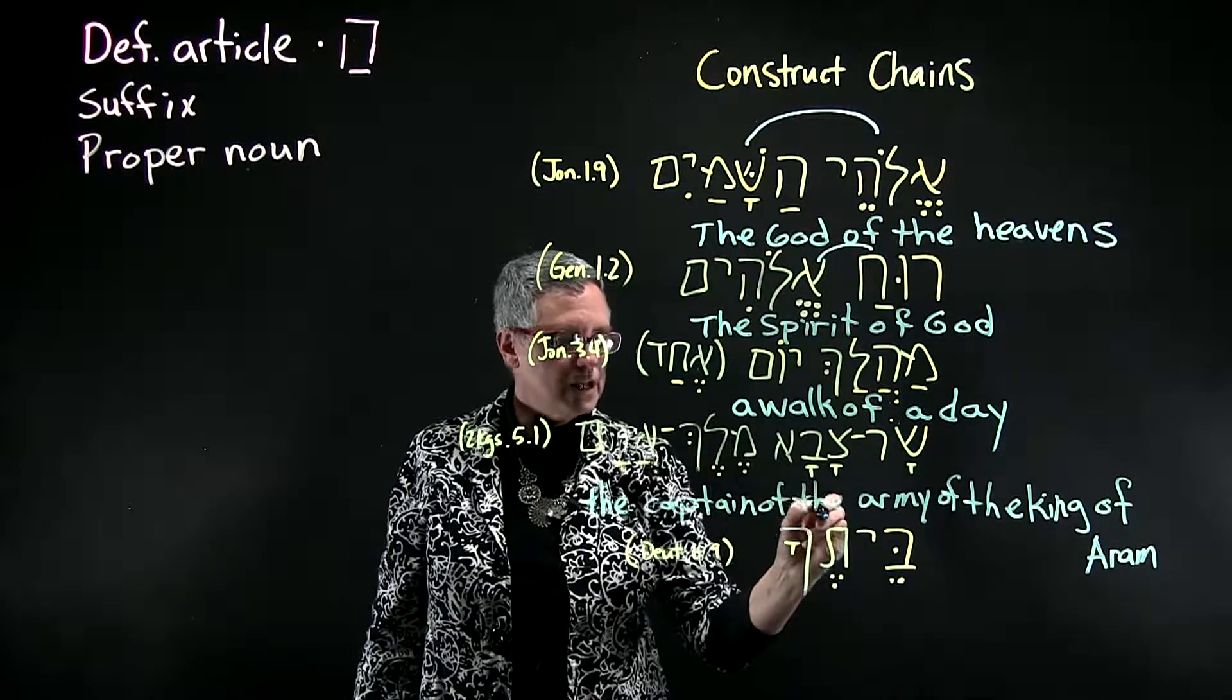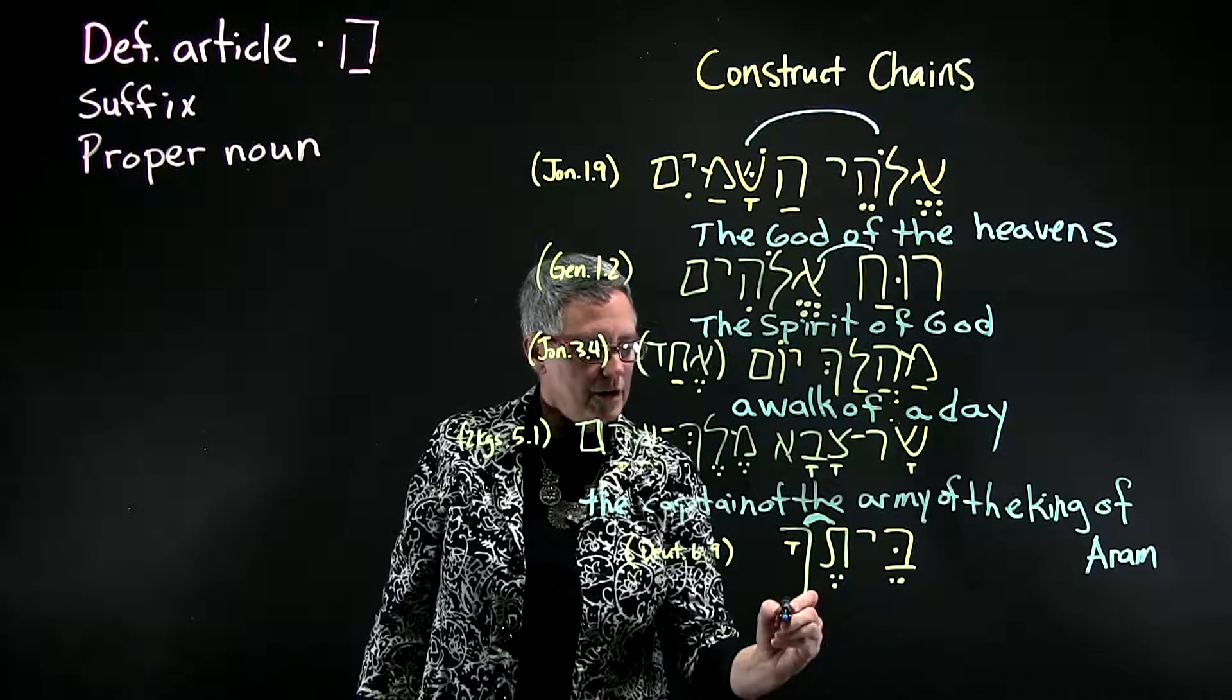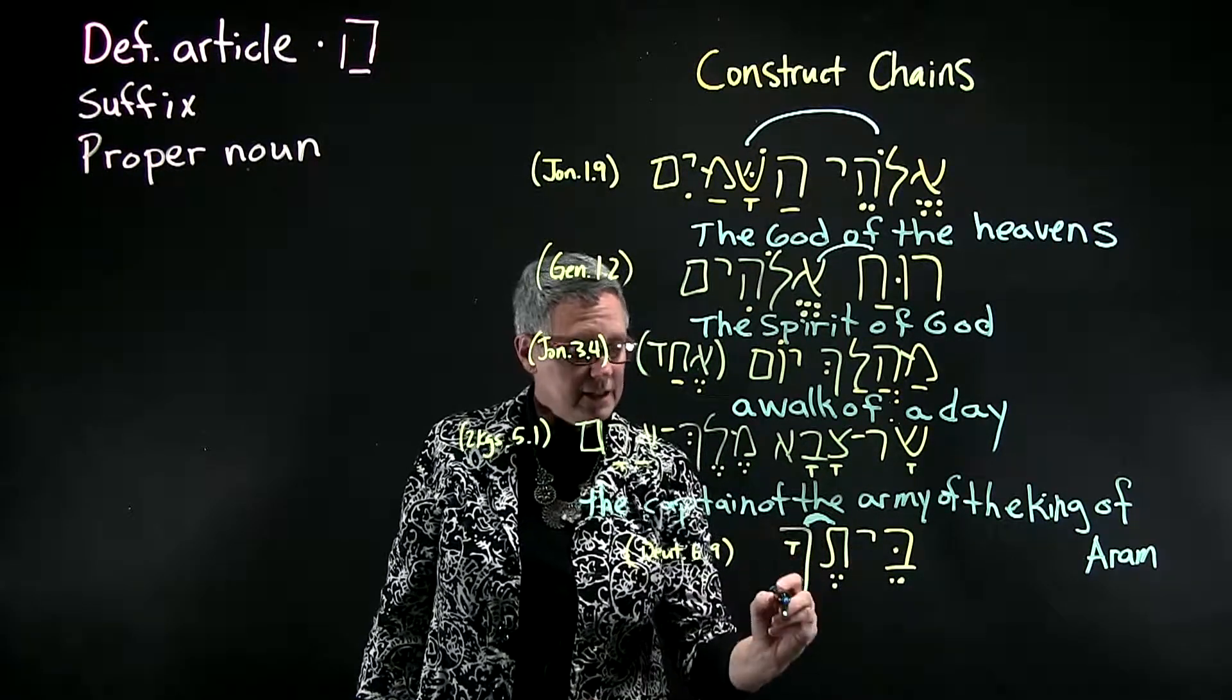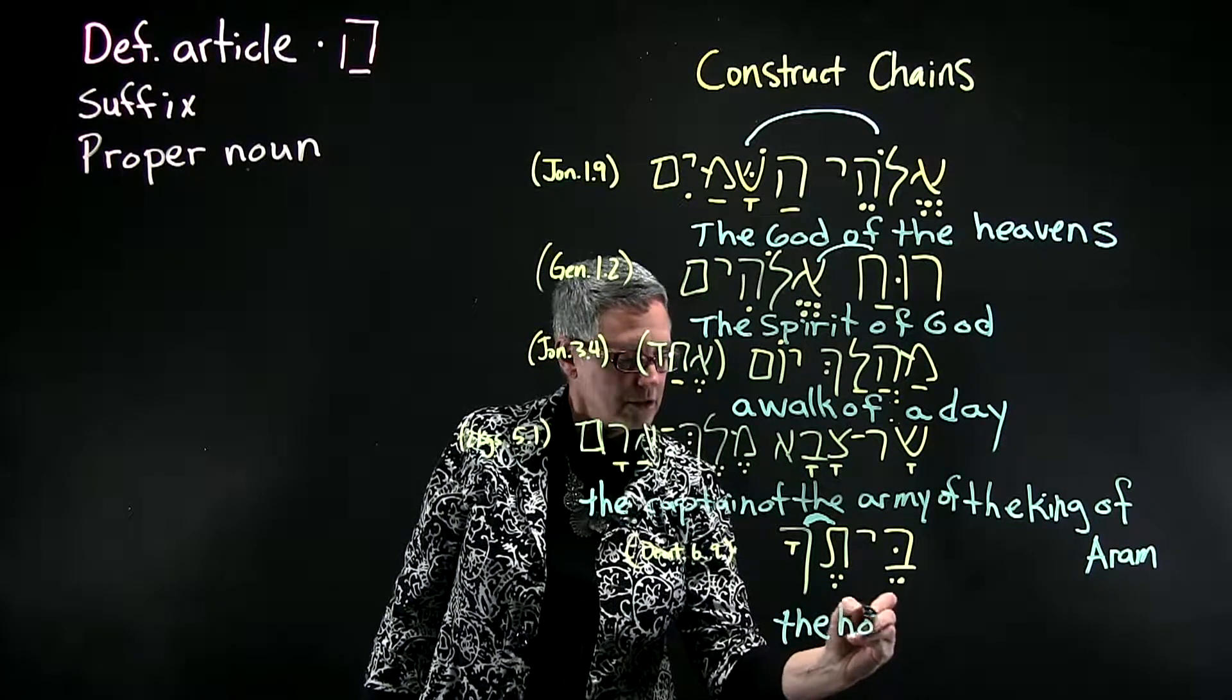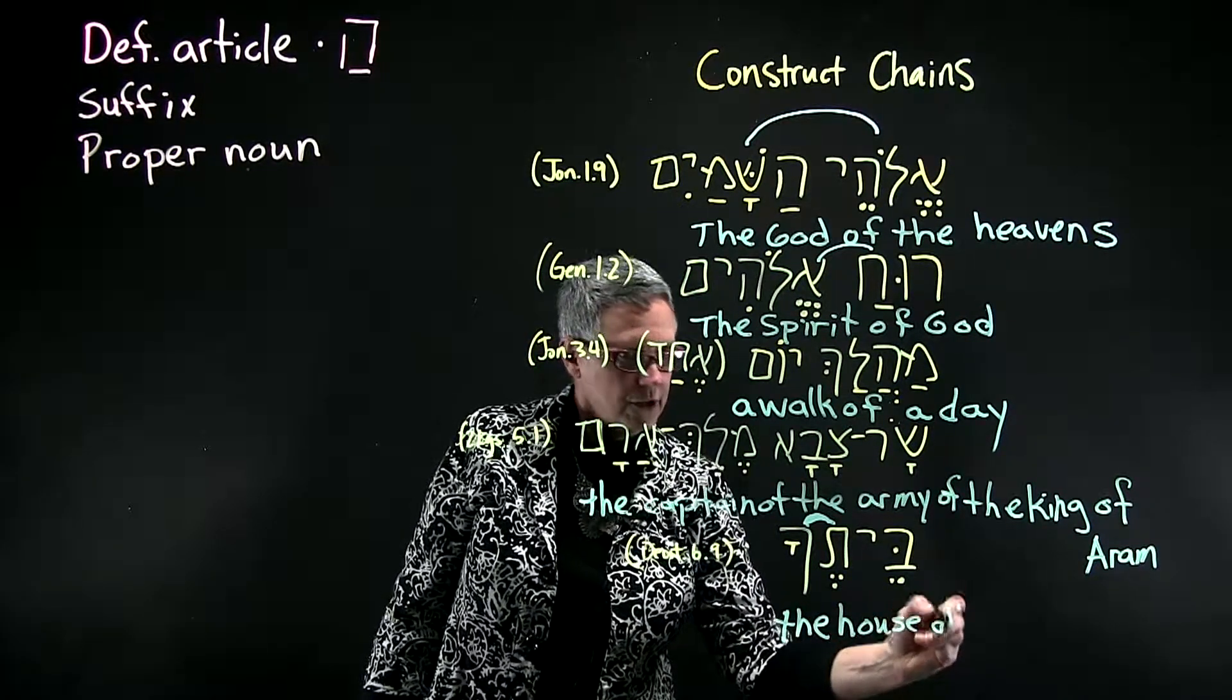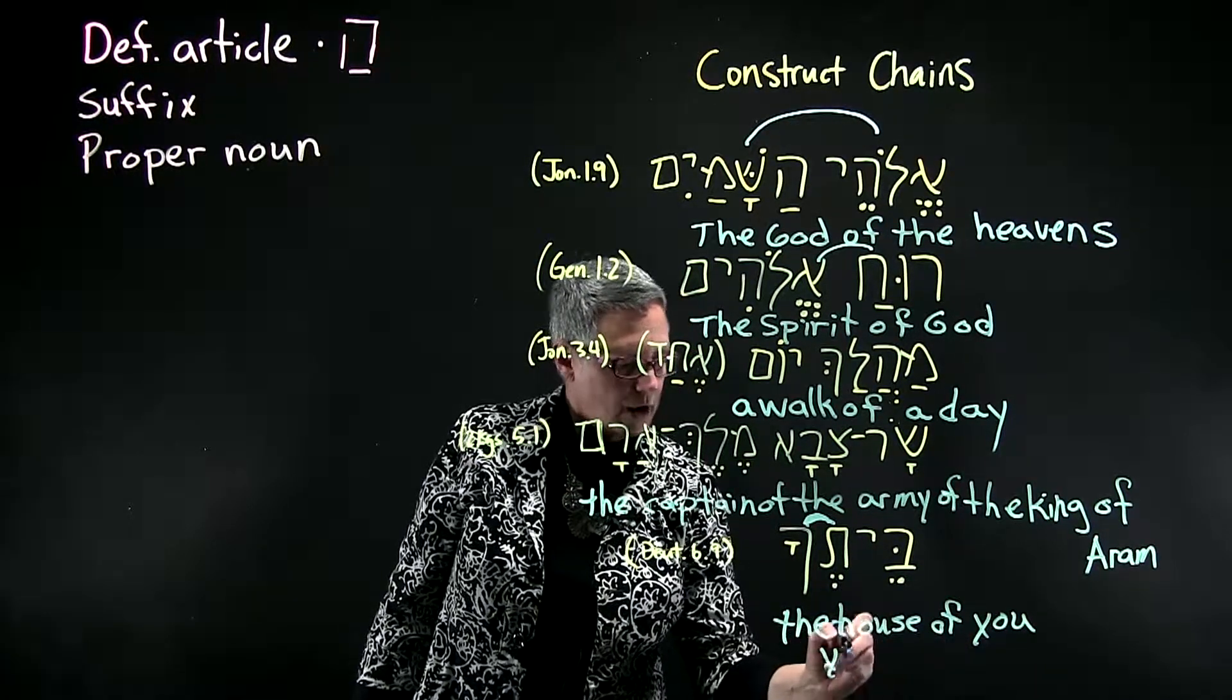Here's the construct chain right here. So it's definite because this is a suffix. So this would be the house of you or your house.